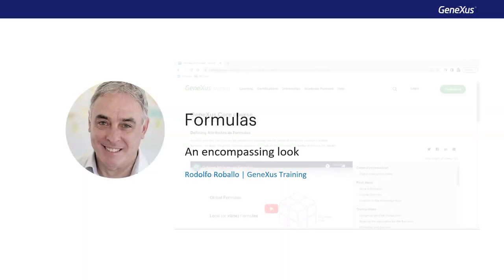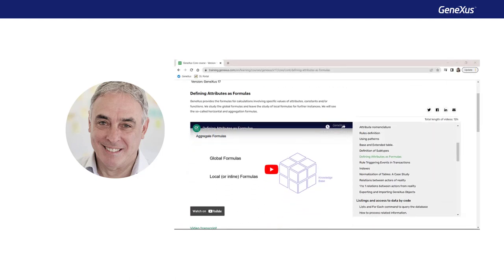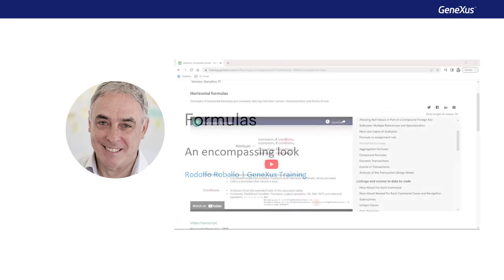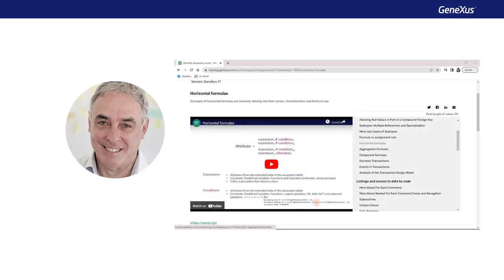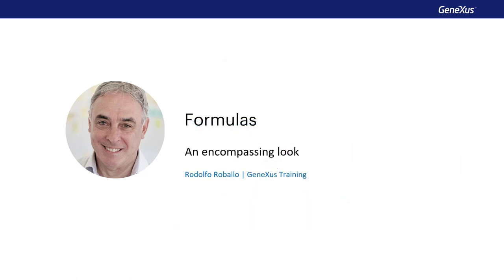In other videos, we've explained what global formulas and inline formulas are by analyzing the different types according to their navigation, including horizontal formulas, aggregation formulas, compound formulas, and the corresponding use cases. In this video, we'll try to provide a broader look, not a detailed one, in order to discover when it's convenient to use formulas according to their type, and when we can use an alternative solution.